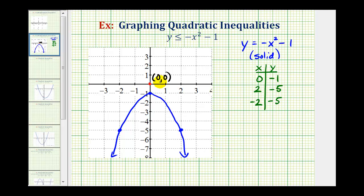So we'll test to see if these coordinates satisfy the inequality. If they do satisfy the inequality, we'll shade the same region the point is in. And if the point doesn't satisfy the inequality, we'll shade the region the point is not in.